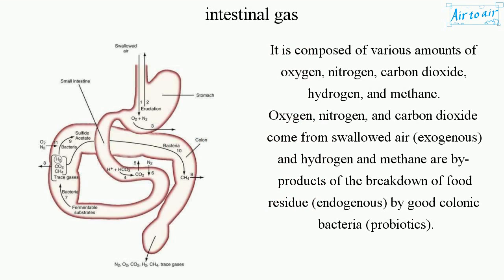Oxygen, nitrogen, and carbon dioxide come from swallowed air — exogenous. Hydrogen and methane are a by-product of the breakdown of food residue, endogenous, by good colonic bacteria — probiotics.